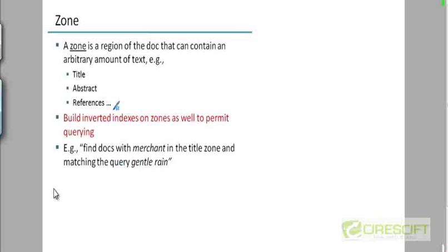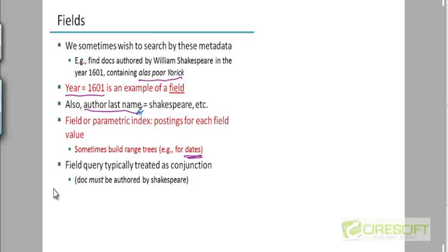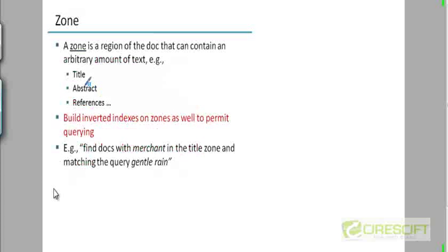Abstracts, references, and titles are all zones. A zone is different from a field in that a field has a well-defined data type and a limited size, whereas a zone can have an arbitrary amount of text. And just like you build parametric indexes on fields, you can build zone indexes on zones. You can have queries that are more complex than the kind you've been looking at.